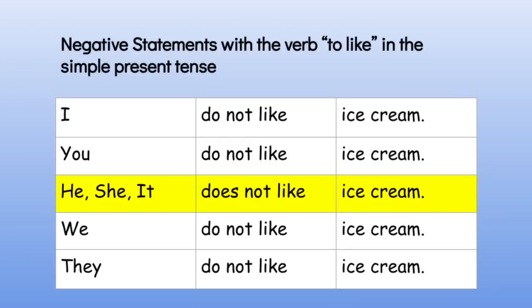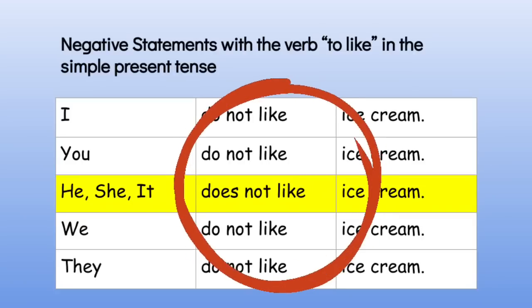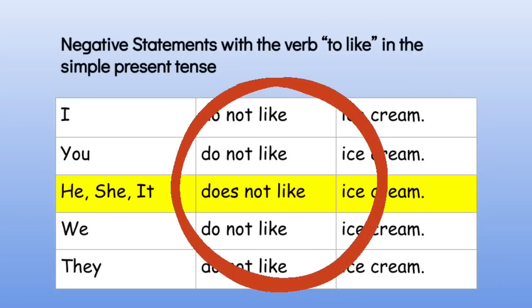Here are examples of negative statements with the verb 'to like' in the simple present tense. I do not like ice cream. You do not like ice cream. He, she, it does not like ice cream. We do not like ice cream. They do not like ice cream. Notice that only he, she, and it use the auxiliary verb 'does,' and the verb 'like' remains the same in all negative statements.